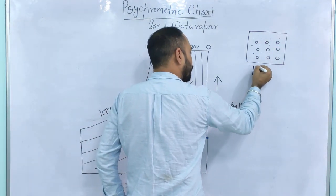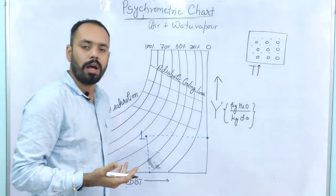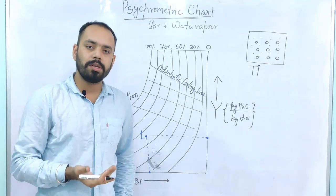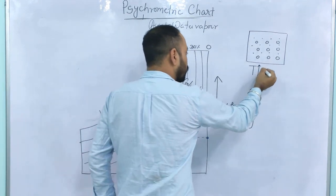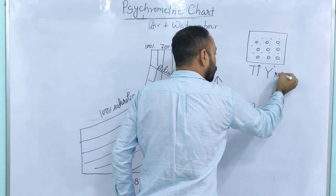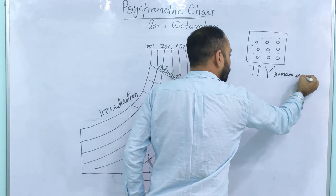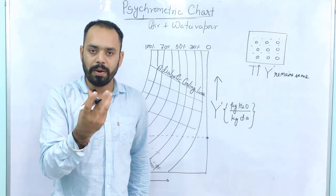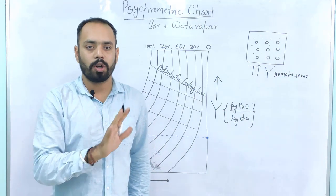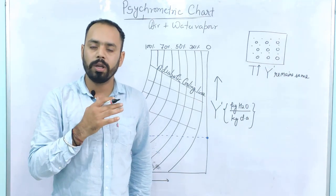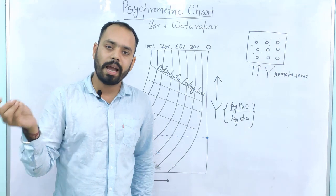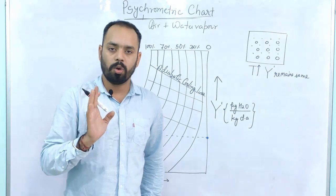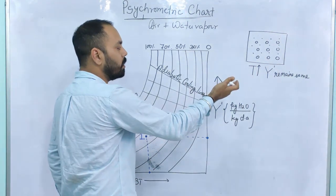Now suppose you increase the temperature of this container — what should happen to the absolute humidity? This is a very important concept: as you increase the temperature, the absolute humidity of a closed container always remains the same. Y' remains the same. The reason is that Y' is defined as mass of water vapor per mass of dry air. If no mass is entering or leaving the container, the mass does not change, and therefore absolute humidity remains constant.